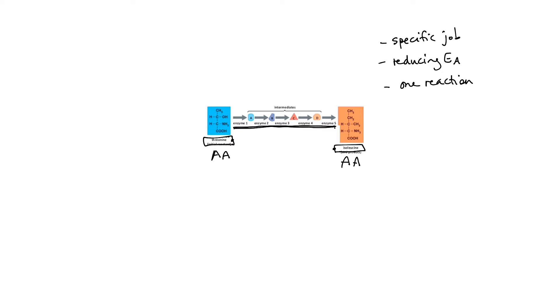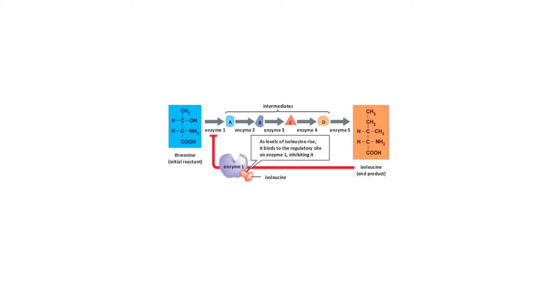And then, each of the intermediates here might not be important for the cell. They're not going to be amino acids themselves, but they are important to help get us, again, from threonine to isoleucine. Now, if we zoom in on this pathway a little bit, you can see that isoleucine here can act as an allosteric inhibitor of enzyme one.